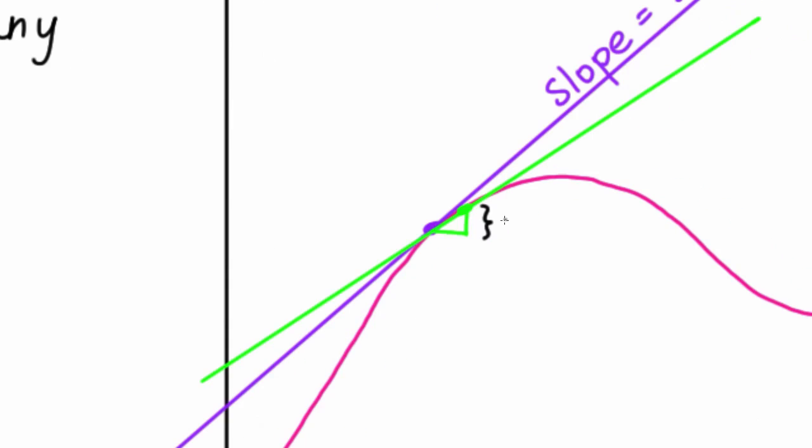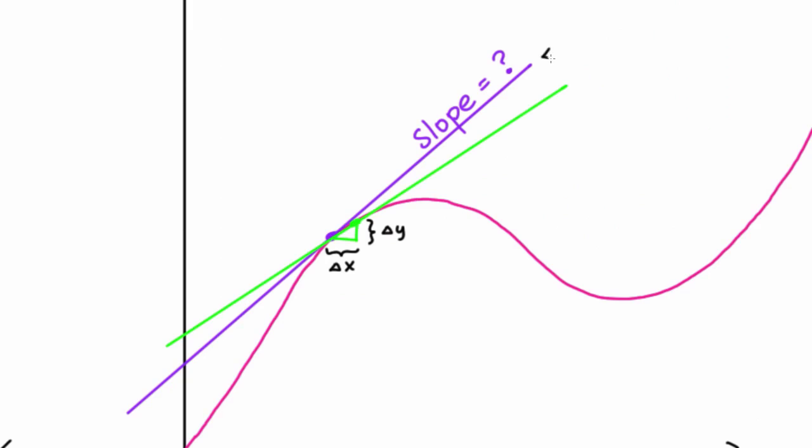So if we zoom in here, and here we have the change in y, and here we have the change in x, the slope of the tangent line is the change in y divided by the change in x, as this change in x goes to zero. Right? This change gets smaller and smaller as the point you choose gets closer and closer to the point of interest. This gets into limits, which you'll learn about in lesson four.